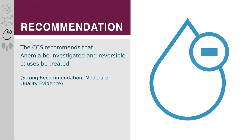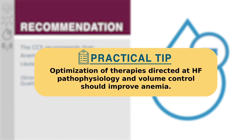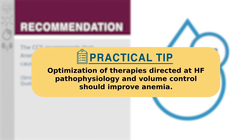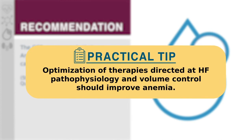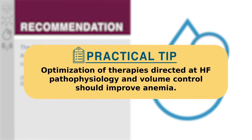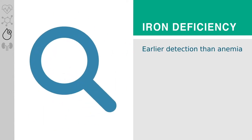The CCS recommends that anemia be investigated and reversible causes be treated. Treatment options for patients with heart failure include evaluation of the contribution of volume overload and concomitant medications, identification of iron deficiency and treatment with oral or intravenous iron supplements, and optimization of heart failure therapy. Iron deficiency is a major contributor to exercise intolerance in heart failure even in the absence of anemia. It is often detected before anemia appears, providing an earlier opportunity for improving outcomes.